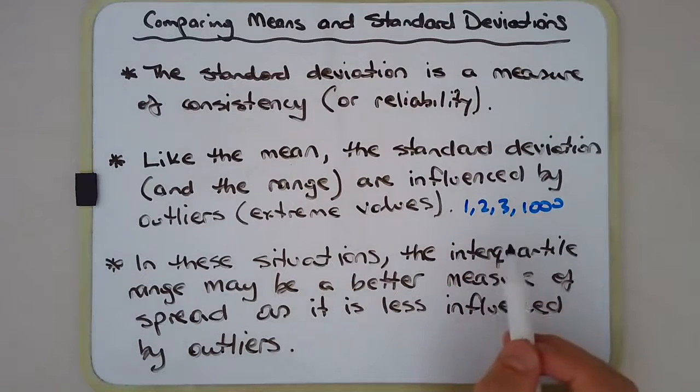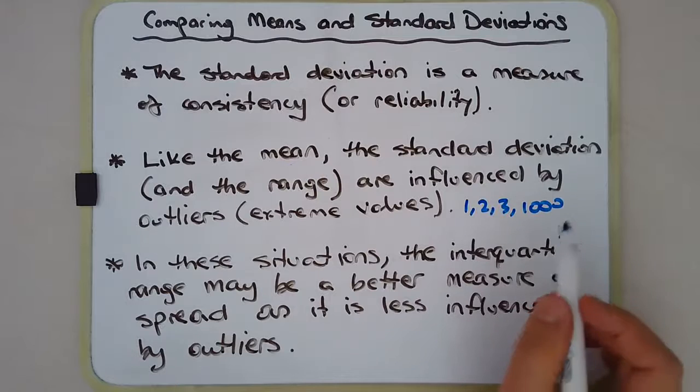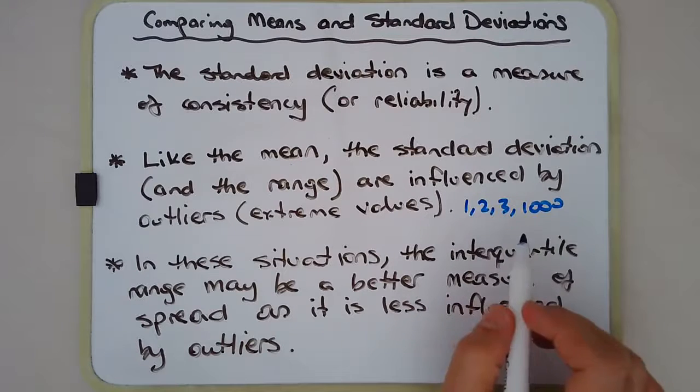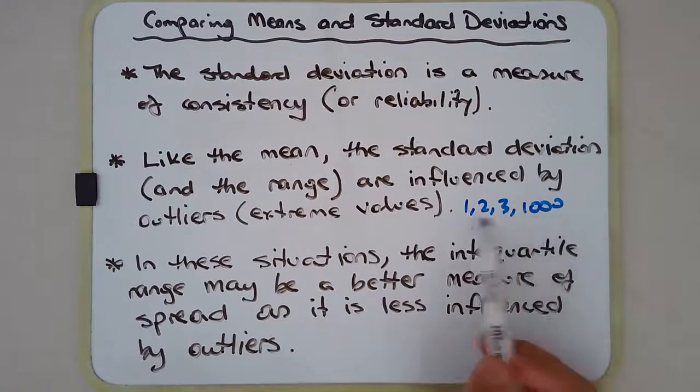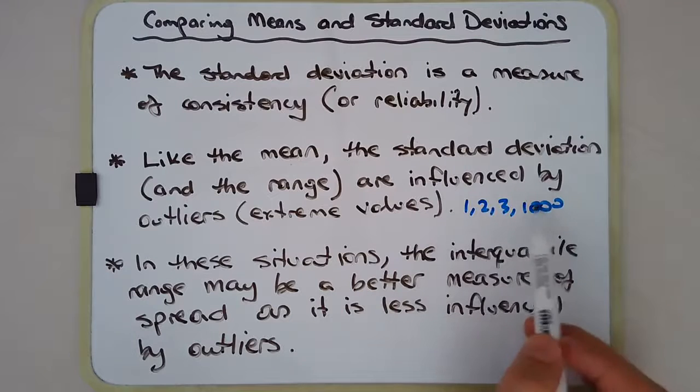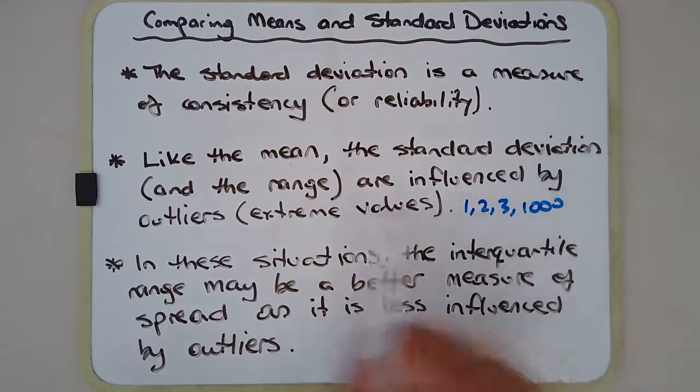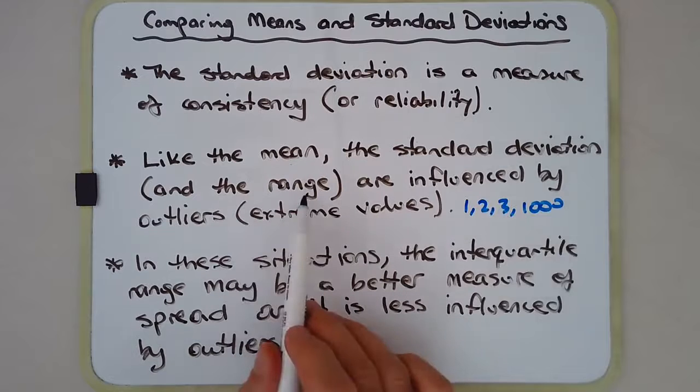In fact the range is 999, so again this outlier, this 1000, is heavily influencing the mean and the range and also would influence the standard deviation as well.